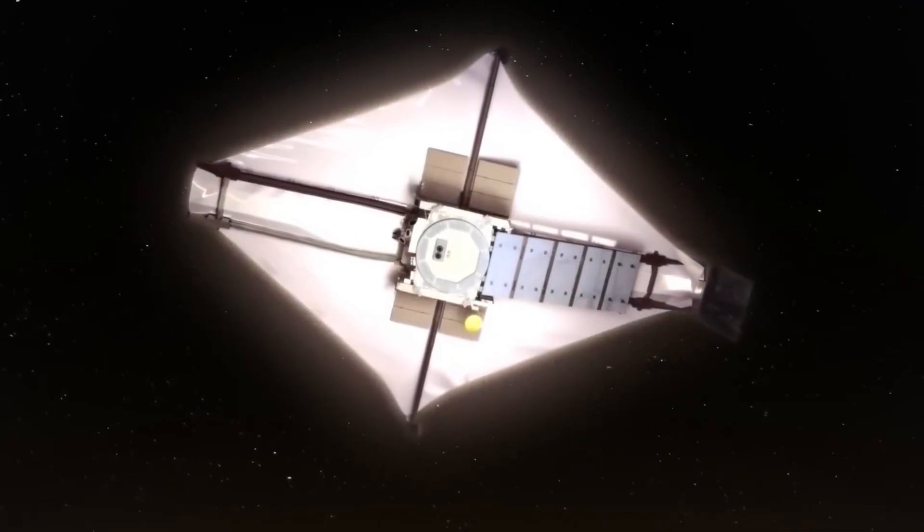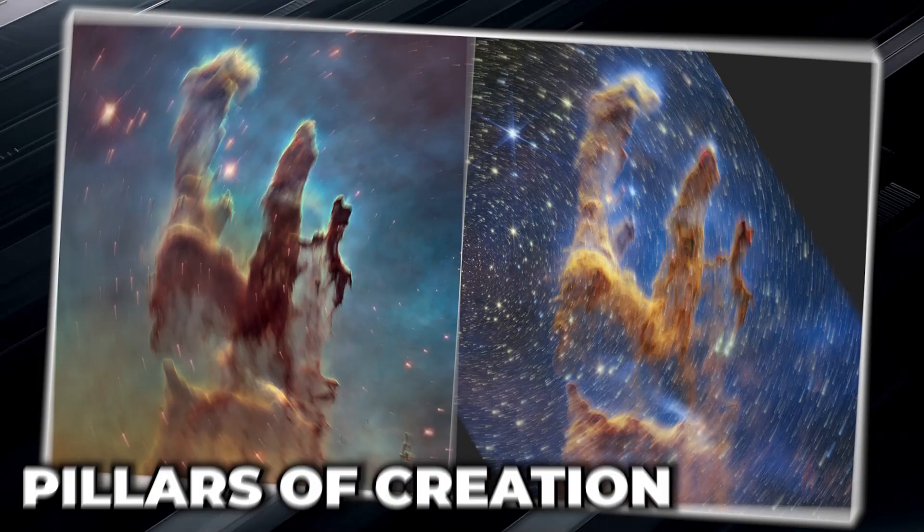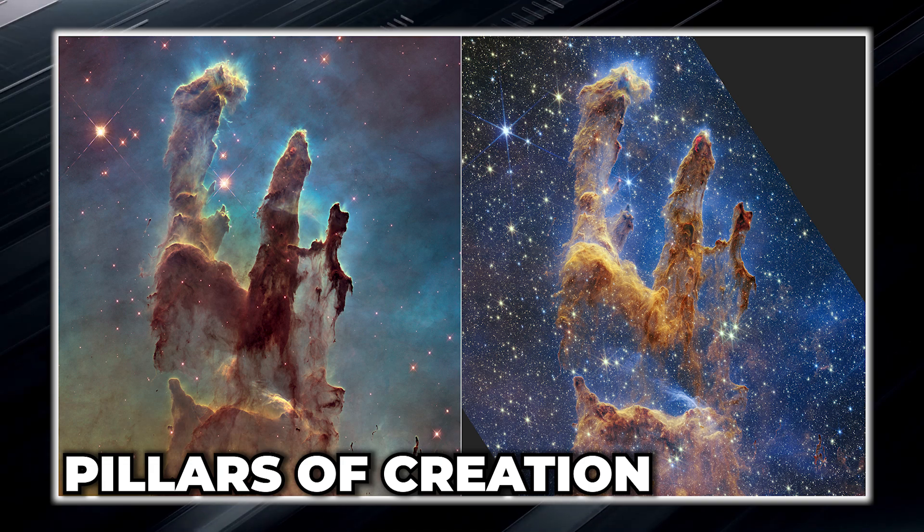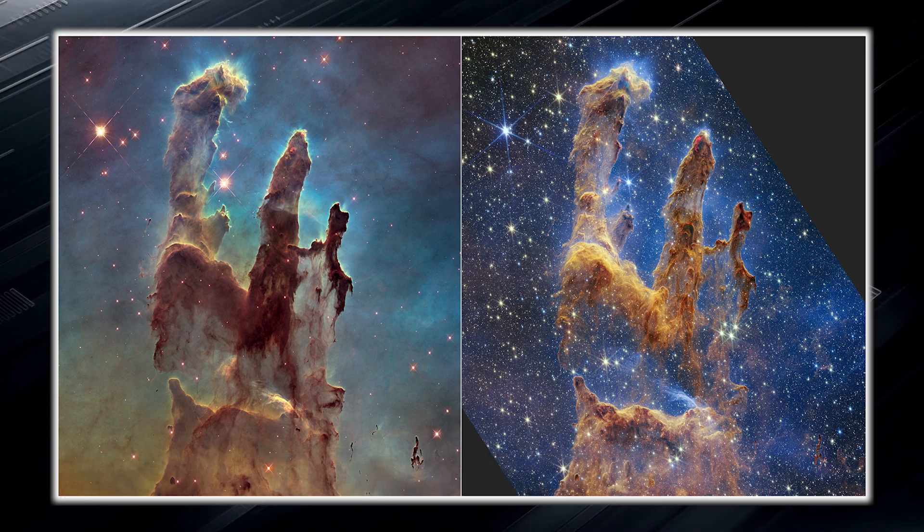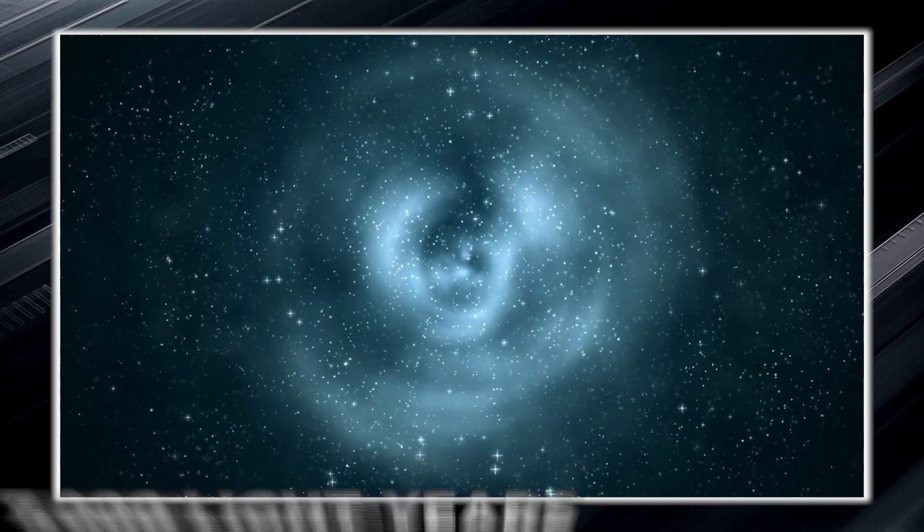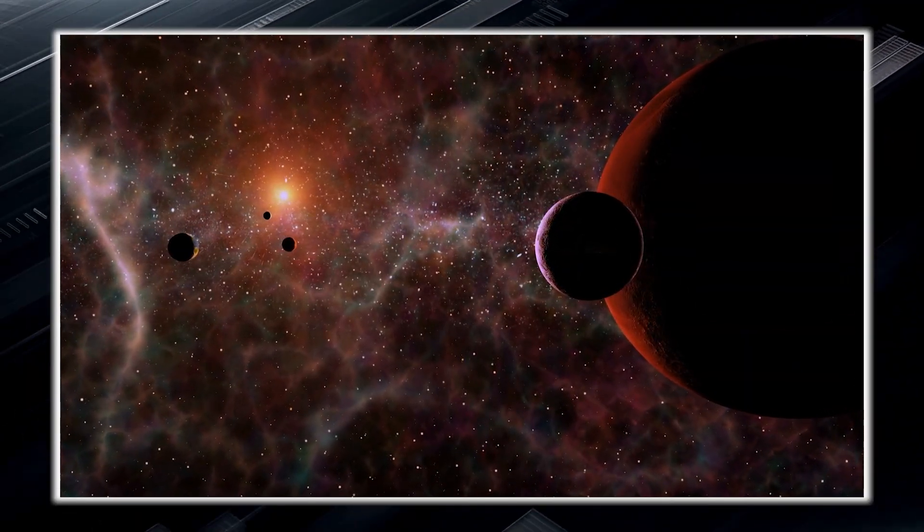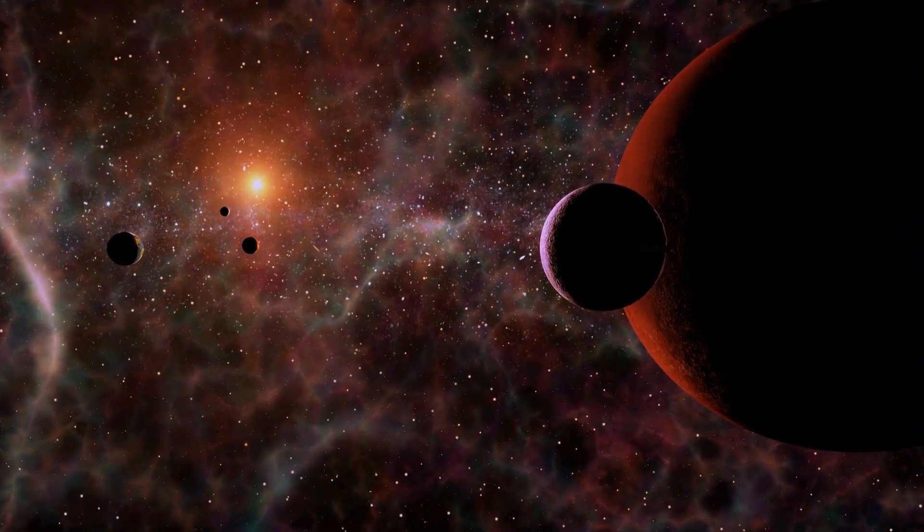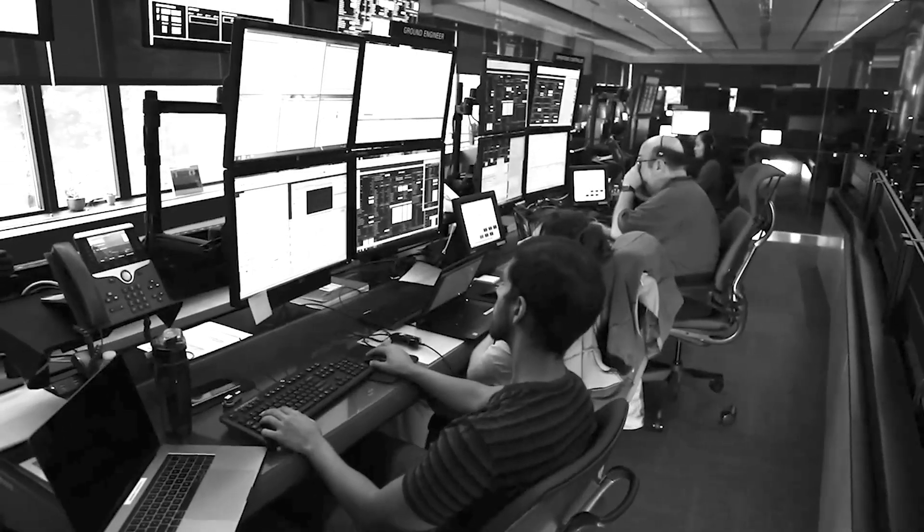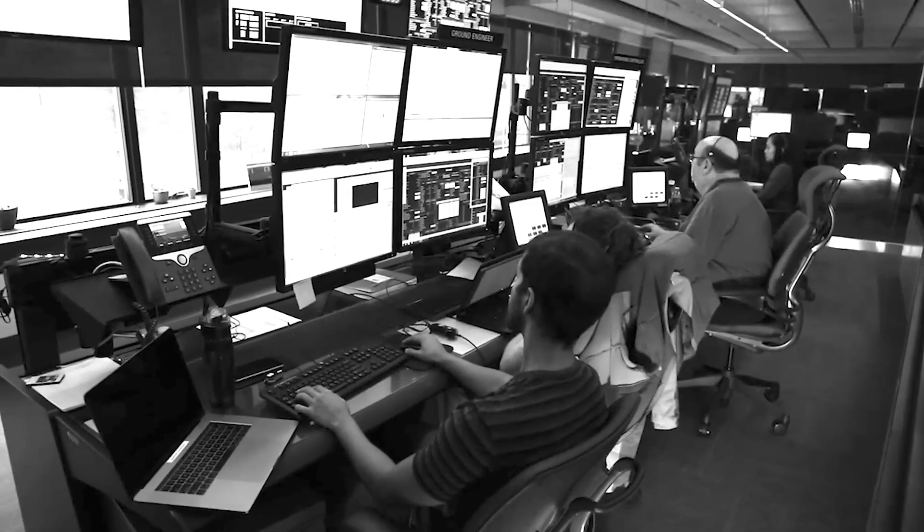When the James Webb turned its instruments toward the iconic Pillars of Creation, it captured the famous dust clouds in incredible detail. These pillars are located in the constellation Serpens, about 7,000 light years away from Earth. The Pillars of Creation are part of the Eagle Nebula, large clouds of gas and dust that were first photographed by the Hubble Space Telescope in 1995.